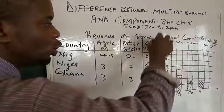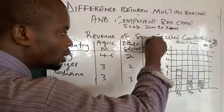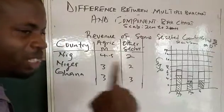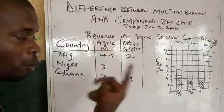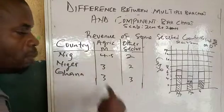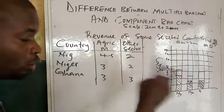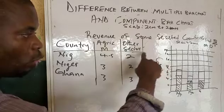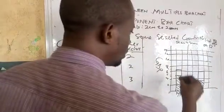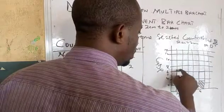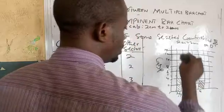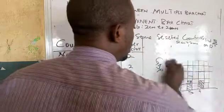So in a component bar chart, you need to total the two quantitative variables, but in a multiple bar chart you don't need to total them — you don't need to sum them up. You just place them beside each other, for example placing 4.4 beside 2. That's what we are going to do now. Let me draw this out.